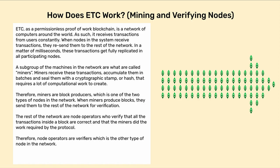A subgroup of the machines in the network are what are called miners. Miners receive these transactions, accumulate them in batches, and seal them with a cryptographic stamp or hash that requires a lot of computational work to create. Therefore, miners are block producers, which is one of the two types of nodes in the network. When miners produce blocks, they send them to the rest of the network for verification. The rest of the network are node operators who verify that all the transactions inside a block are correct and that the miners did the work required by the protocol. Therefore, node operators are verifiers, which is the other type of node in the network.